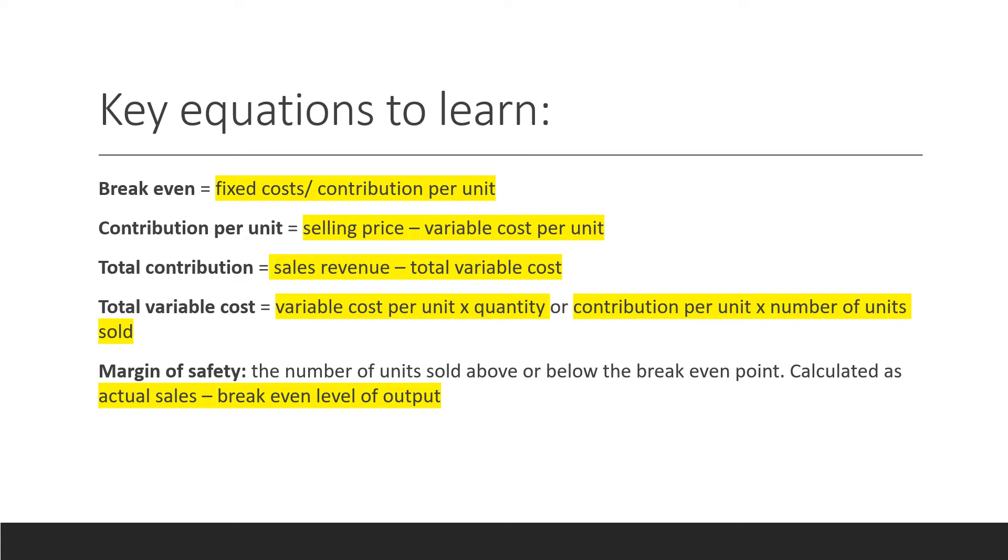To work out total contribution, you do sales revenue minus the total variable cost. To work out total variable cost, you can either do variable cost per unit times by the quantity, or you can do contribution per unit times by the number of units that are sold.